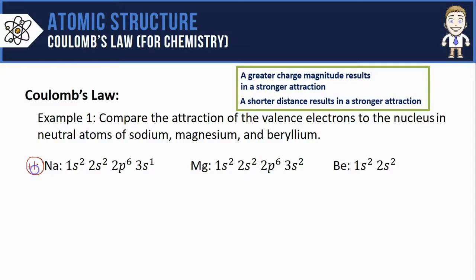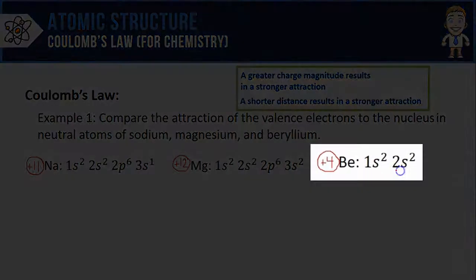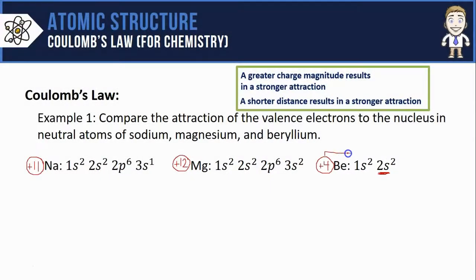Sodium has 11 protons so a nuclear charge of plus 11. Here's magnesium's plus 12 nucleus and beryllium with a plus 4. So the configuration itself gives me a pretty nice visual for distance. What I mean by that is beryllium's valence electrons that I'm underlining in red are in the second energy level, so I can see just based on how it looks that the valence electrons in beryllium are closer to the nucleus.